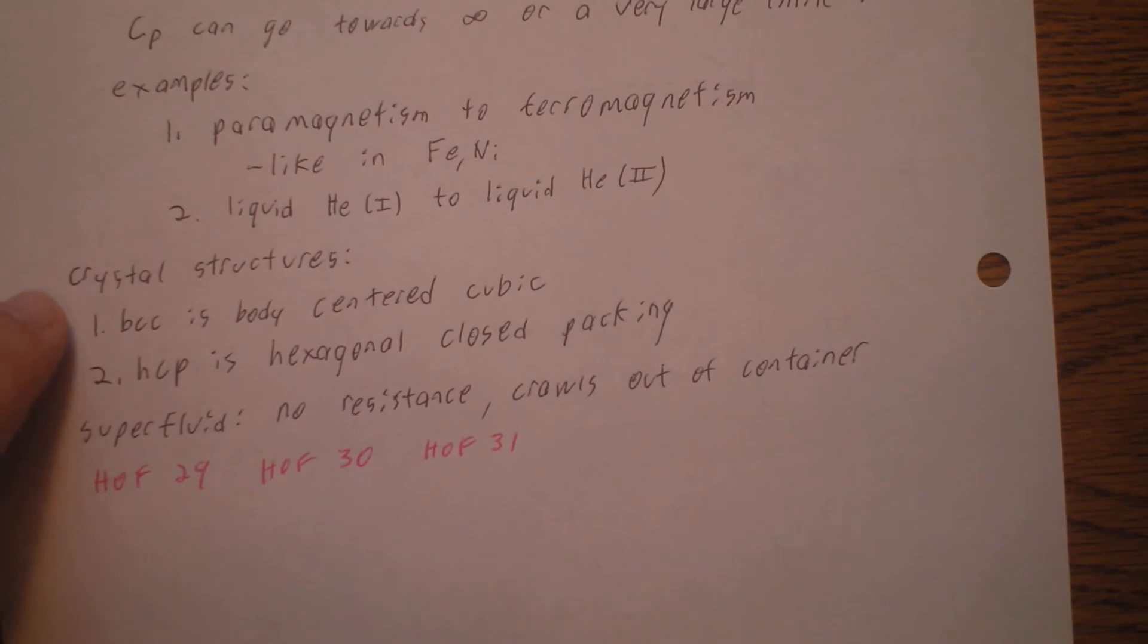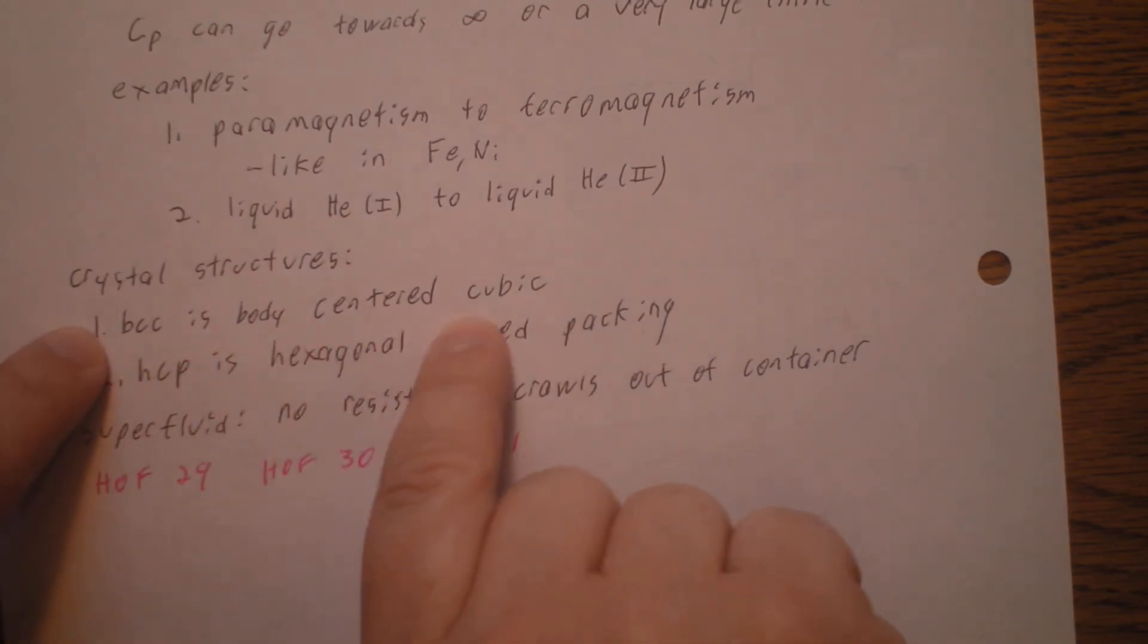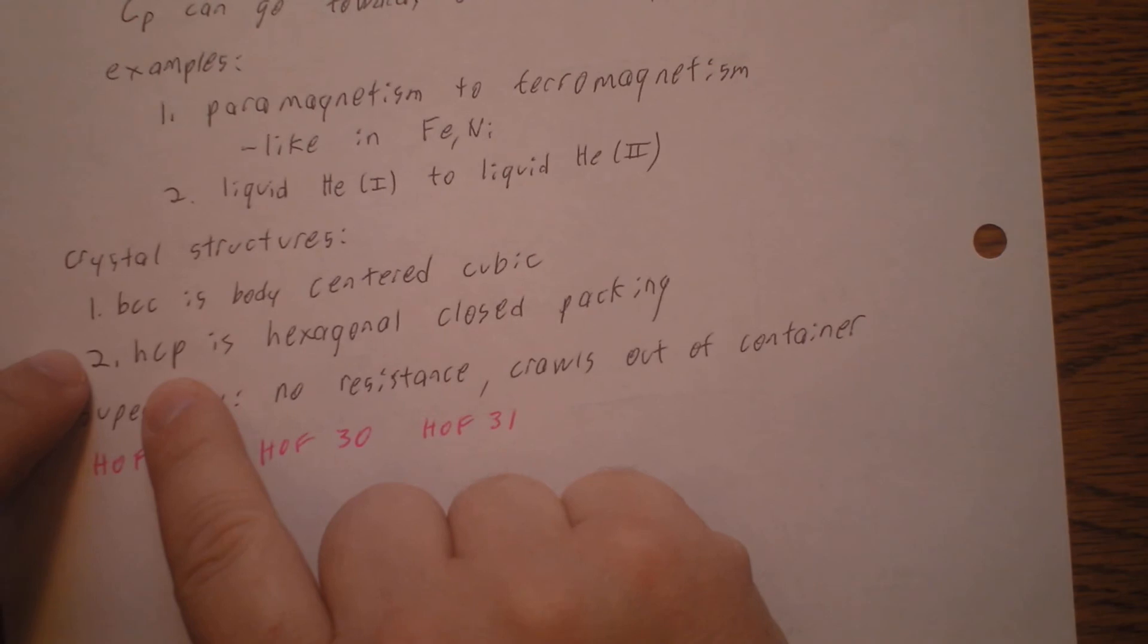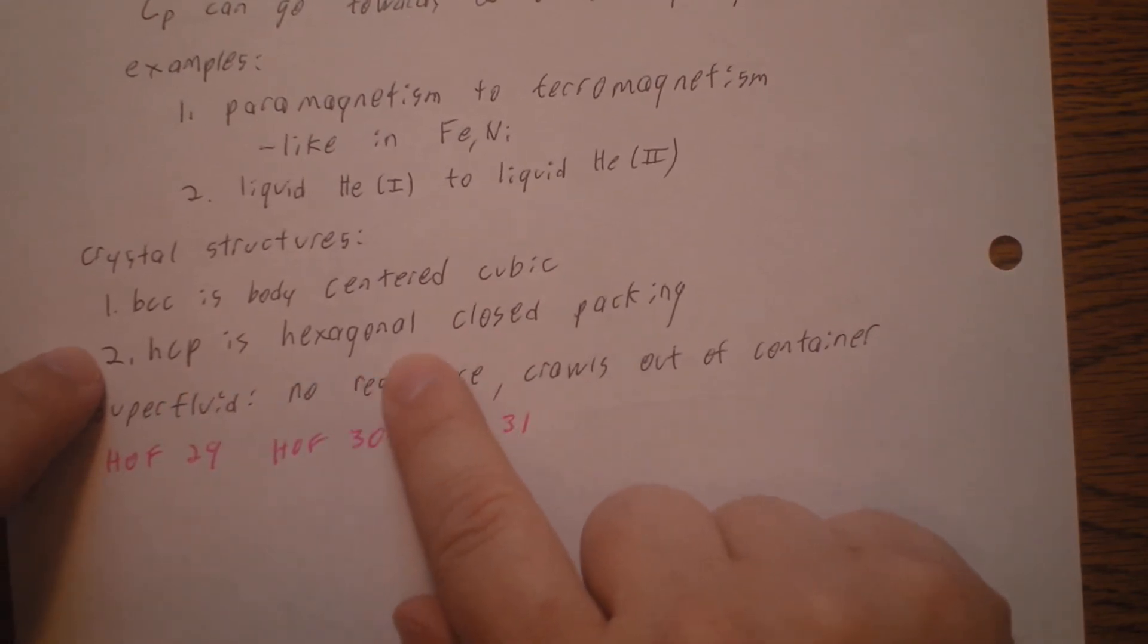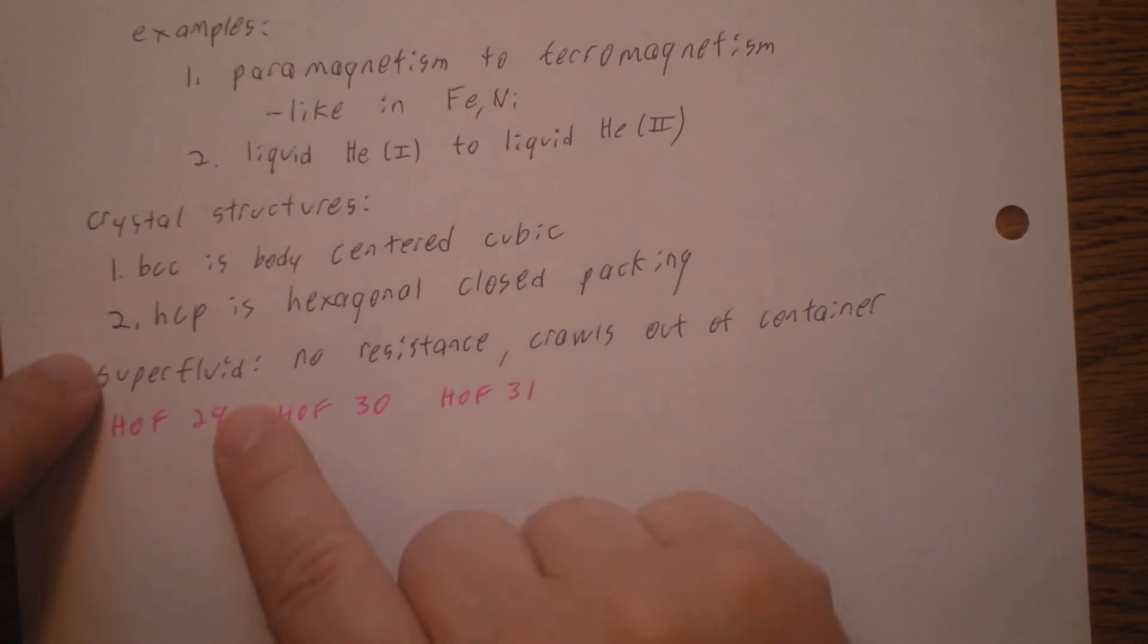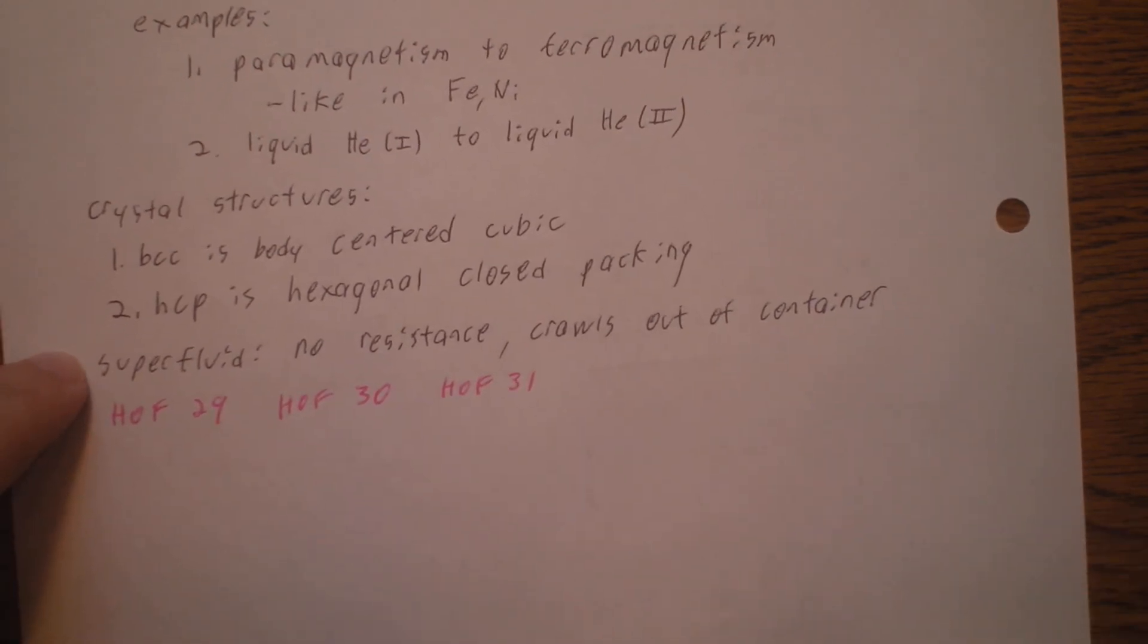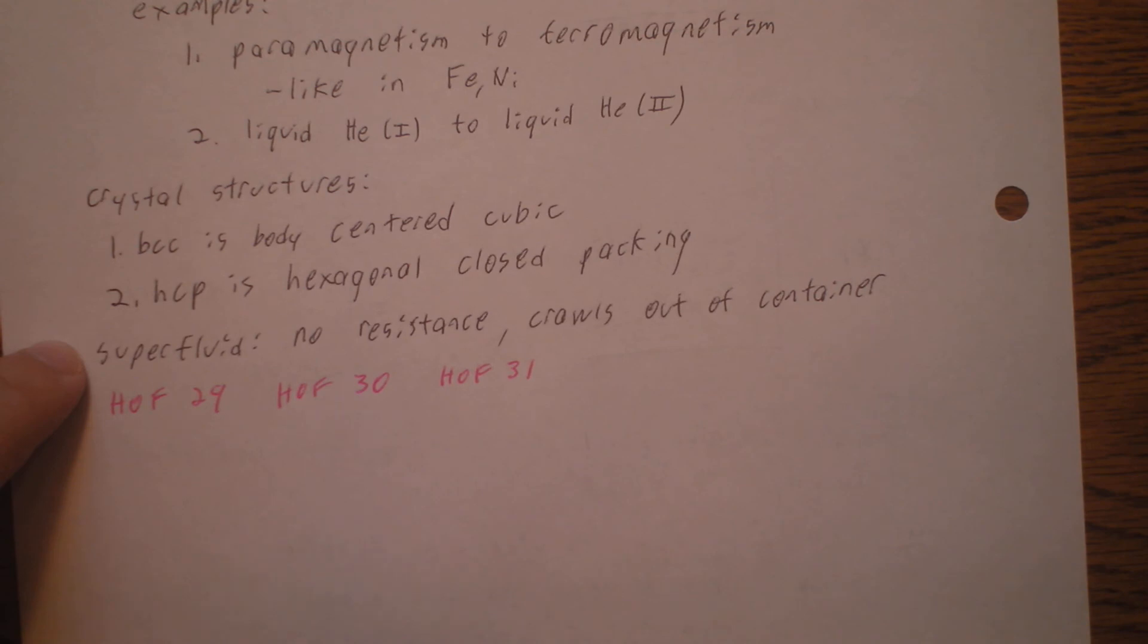There are also different types of crystal structures. BCC stands for body-centered cubic, and HCP is hexagonal close-packing. Superfluid, there's no resistance. It crawls out of the container. See handouts 29, 30, and 31. That is the end of chapter 7.